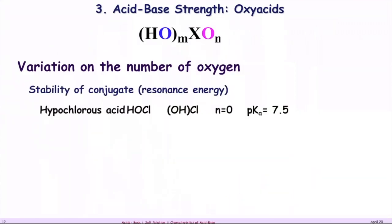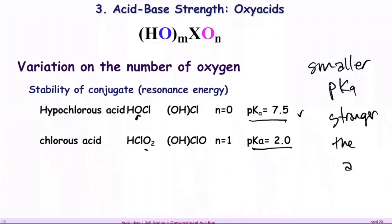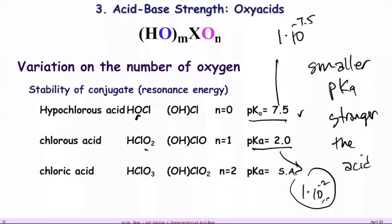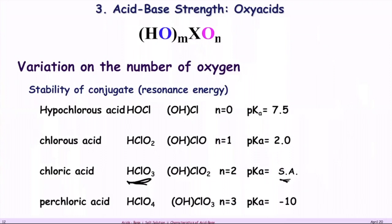Here is the evidence: one oxygen gives a pKa of 7.5; two oxygens give a pKa of 2.0. The smaller the pKa — just like the smaller the pH — the stronger the acid. A pKa of 2.0 means hydronium concentration of 10⁻², while pKa 7.5 means 10⁻⁷·⁵. 10⁻² is a bigger number. For perchloric acid with four oxygens, it's a strong acid with a negative pKa, meaning the hydronium concentration exceeds 1 molar.